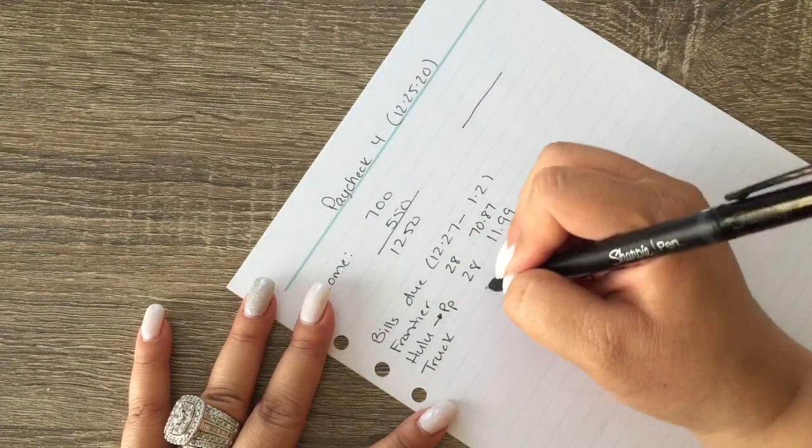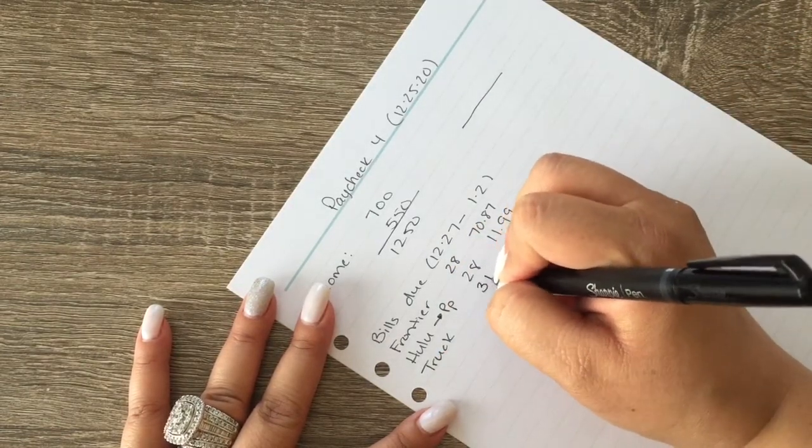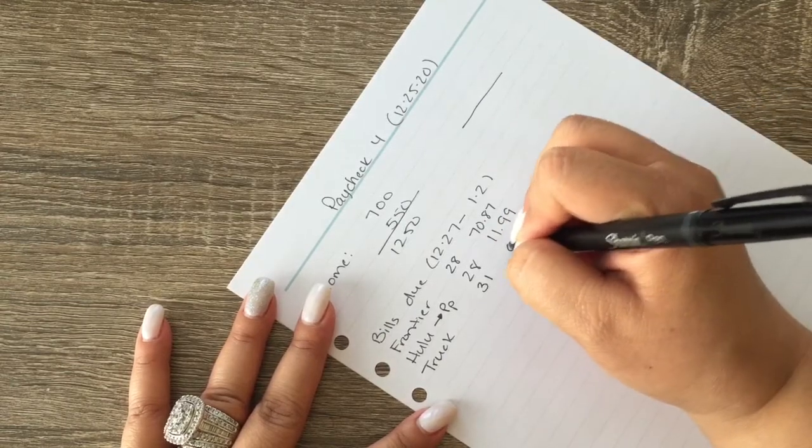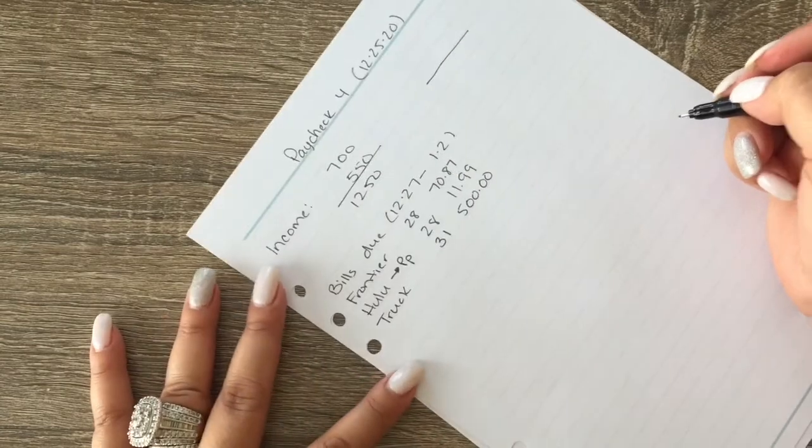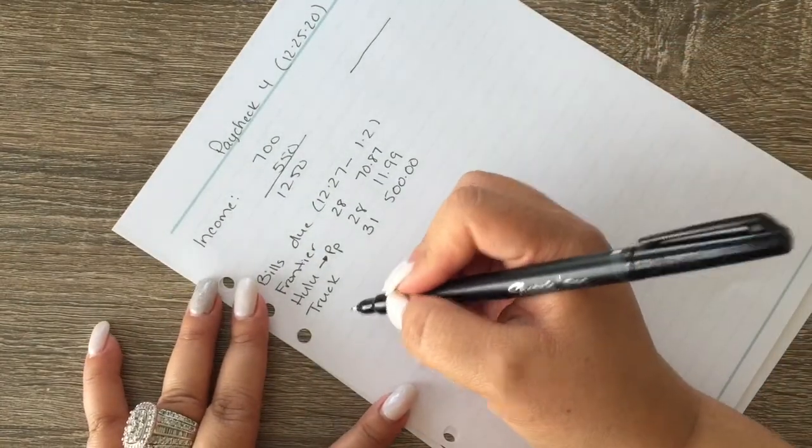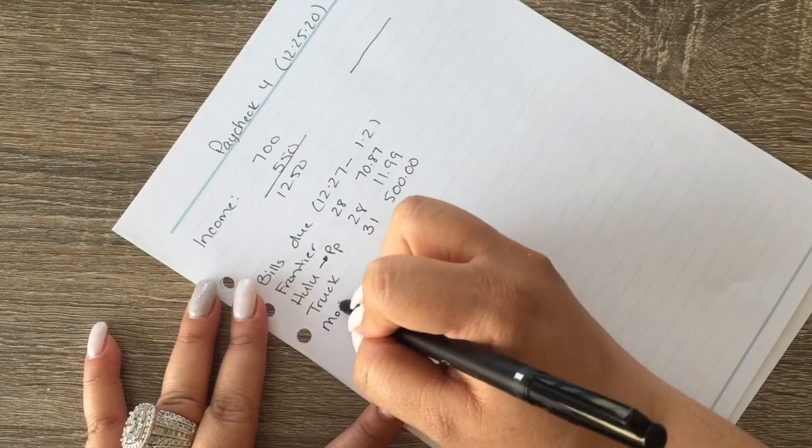My husband's truck is due on the last day of the month so it varies and his is for some change but we just do a flat $500. Okay, so our mortgage will be coming out of this check.